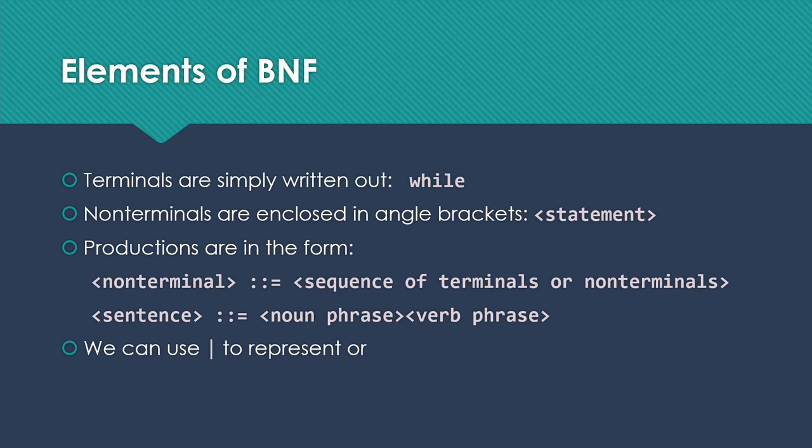Here's an example. Sentence goes to noun phrase followed by verb phrase, where noun phrase and verb phrase are also non-terminals. The only other thing we have to worry about in terms of what the elements of BNF are is that we can use the pipe symbol or the vertical bar to represent OR, and that's all there is to it. BNF is very, very simple in terms of its structure.